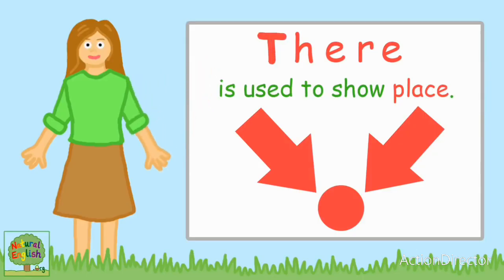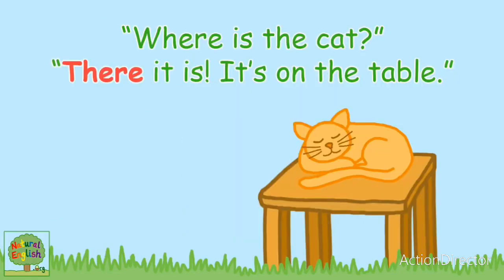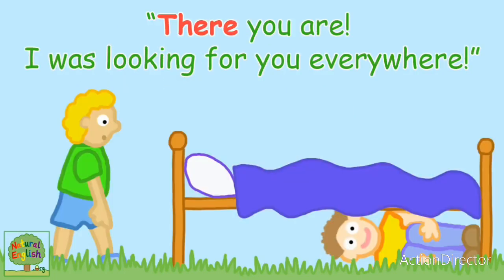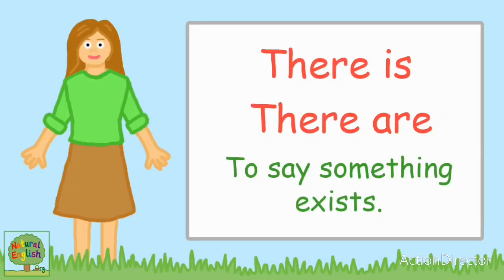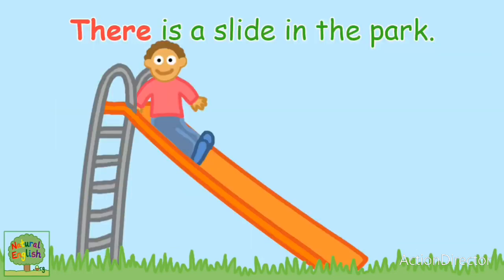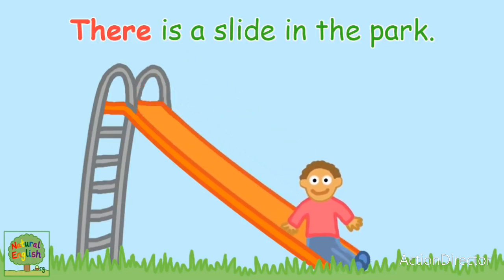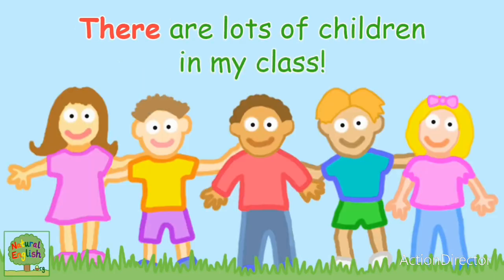There, spelled T-H-E-R-E, is used to show place. Where's the cat? There it is — it's on the table. There you are, I was looking for you everywhere. There is also used in there is and there are to say something exists: There is a slide in the park. There are lots of children in my class.